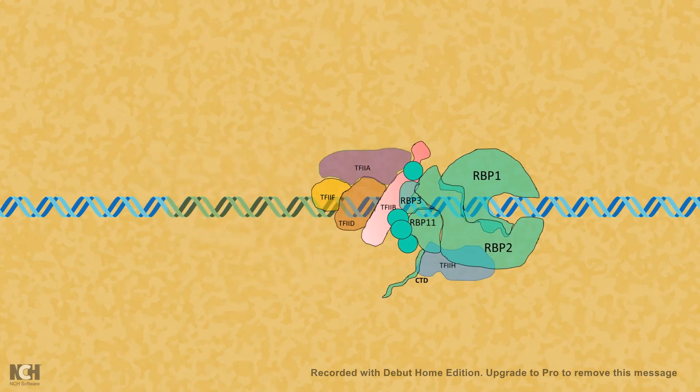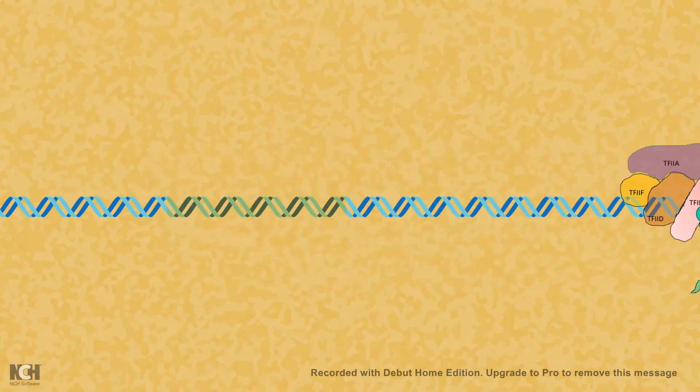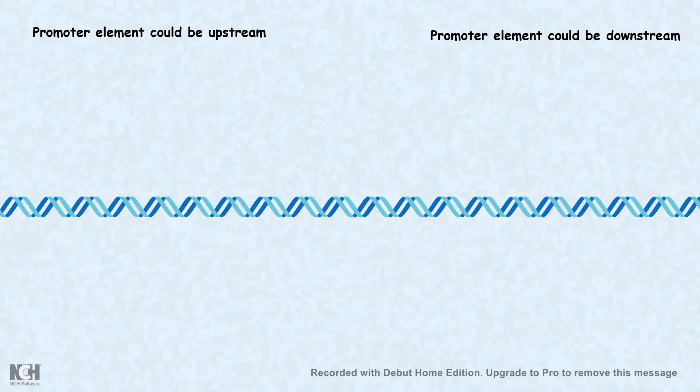As a result, transcription would start. Promoter elements can be upstream or downstream to the transcription start site, and there are evidences for both. One of the most common promoter elements is located 24 to 30 base pairs upstream — the minus sign indicates upstream — from the transcription start site.